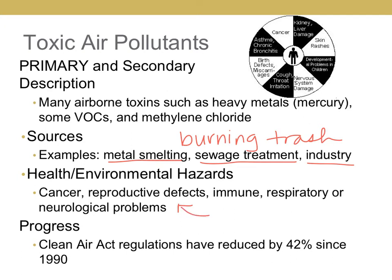Health effects include cancer, reproductive defects, and immune, respiratory, or neurological problems. Please notice: this is the only category that gives you cancer. So don't write lung cancer for any of the other pollutants. For almost every air pollutant, if you write asthma, you're good. For lead, you have to talk about lowering IQ. The only one you can write lung cancer or any kind of cancer for on an FRQ is toxic air pollutants. The Clean Air Act has helped reduce them.